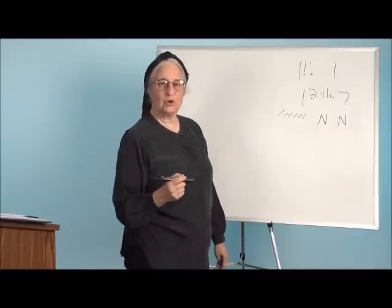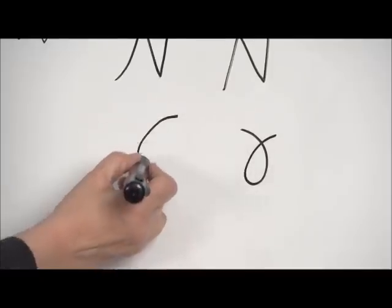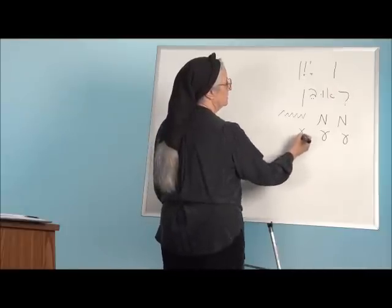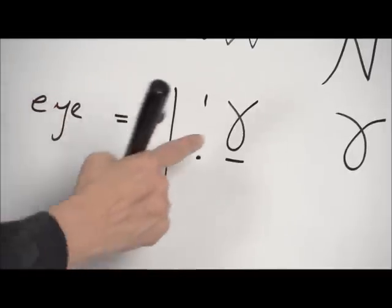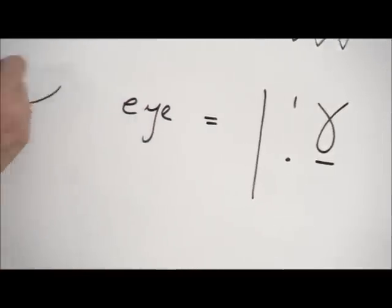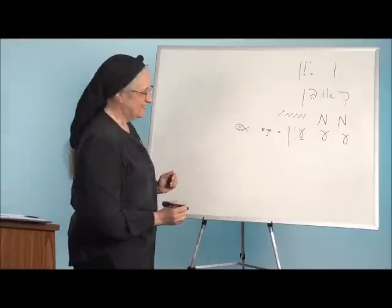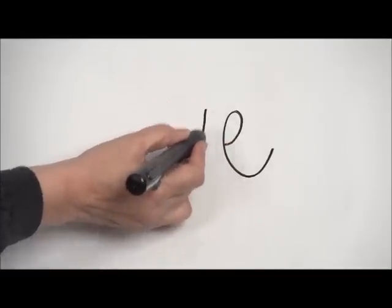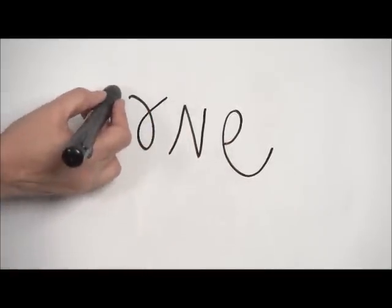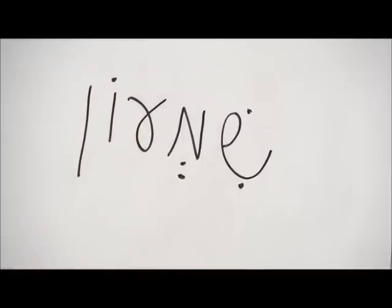The other letter we need to write Shim'on is the Ayin. The Ayin starts at the right, comes down, and circles to the left — it's quite a different-looking letter. The word Ayin means 'eye,' and if you turn the Ayin sideways you can see it. Now here comes Shim'on: the Shin starts at the bottom and circles up, here's the Mem — down, up, down — here's the Ayin starting on the right, here's the Bet, and the Nun sofit. Shim'on.